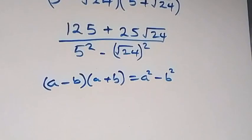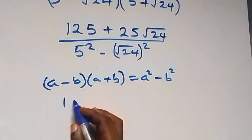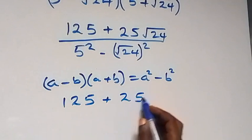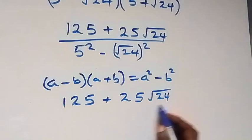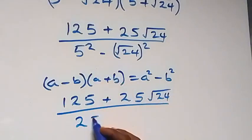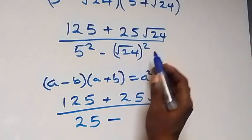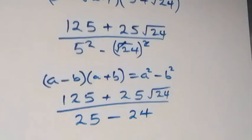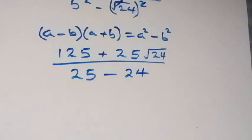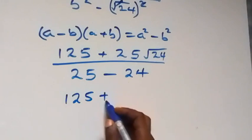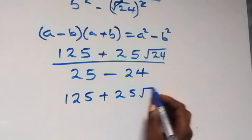The numerator becomes 125 plus 25 root 24. The denominator: 5 squared is 25, and the square root squared cancels to give 24. So 25 minus 24 equals 1, meaning the whole expression equals 125 plus 25 root 24 over 1.